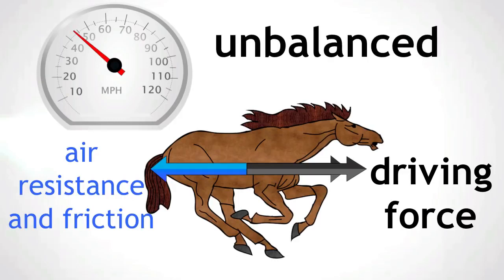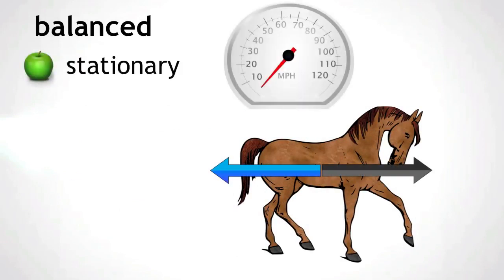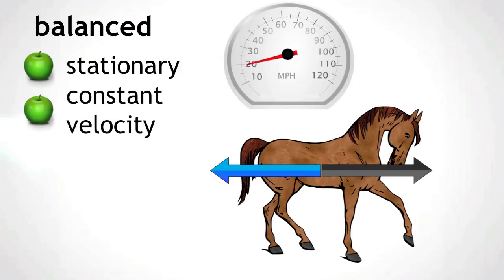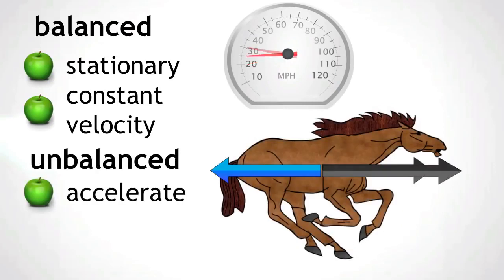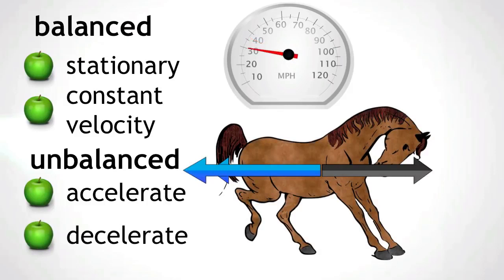So in summary, when the forces are balanced on an object, the object will either remain stationary or travel at a constant velocity. When the forces are unbalanced, the object will either accelerate, meaning an increasing velocity, or decelerate, meaning a decreasing velocity.